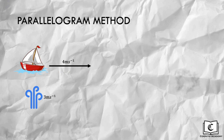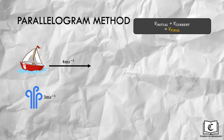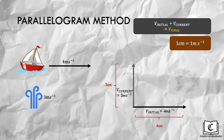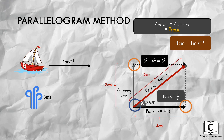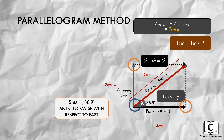Now for the parallelogram method. We first come up with the vector addition equation and choose a suitable scale. Next, we draw the two velocity vectors with both tails starting from the same point. We then draw the initial velocity vector on the tip of the water current vector, and the water current vector on the tip of the initial velocity vector, to form a parallelogram. We draw the final velocity vector from the origin to the intersection point of the tips of both vectors. Using the same method as tip-to-tail, the final velocity is 5 meters per second, 36.9 degrees anticlockwise with respect to east.